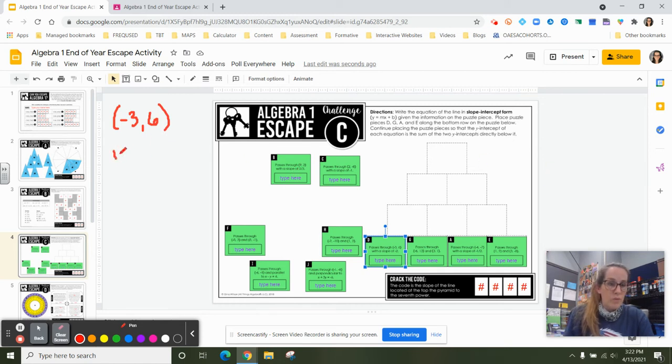So I know that I have y equals negative 2x plus b, right, because I know my slope is negative 2. And since they gave me a point that's on the line, negative 3, 6, I know an x coordinate and y coordinate. So I can go ahead and plug those in.